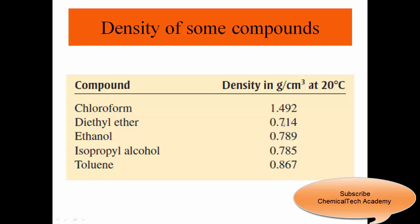If you compare these with the density of water, which is 1 gram per cubic centimeter, we can say the first one — chloroform — is heavier than water because its density is greater than the density of water. The rest of the compounds, because they have a density lower than 1, or lower than the density of water, are lighter.